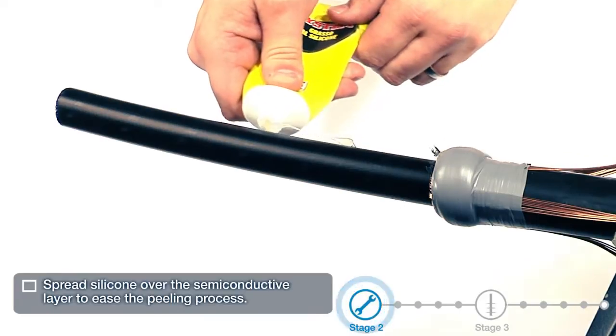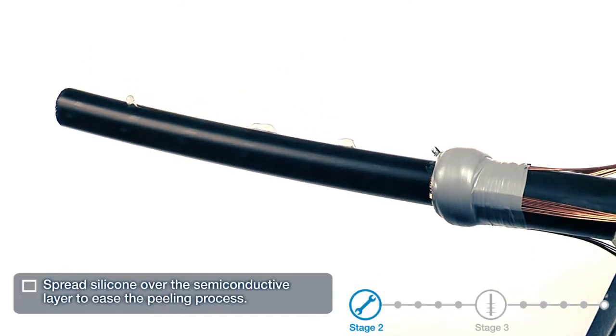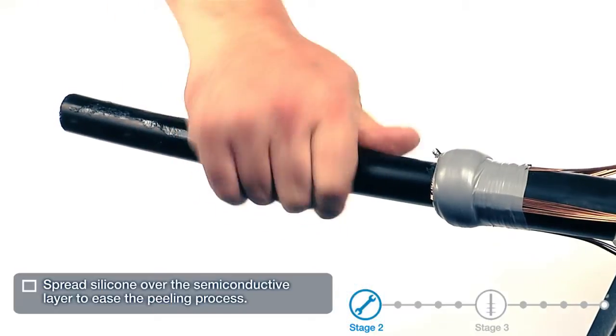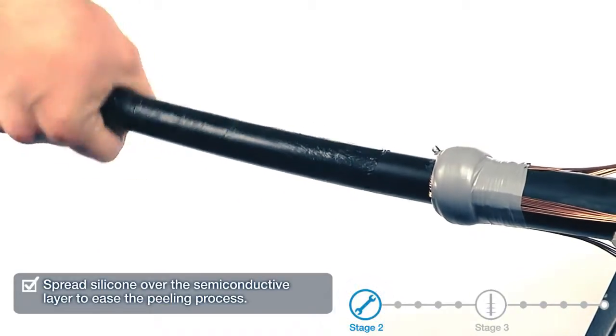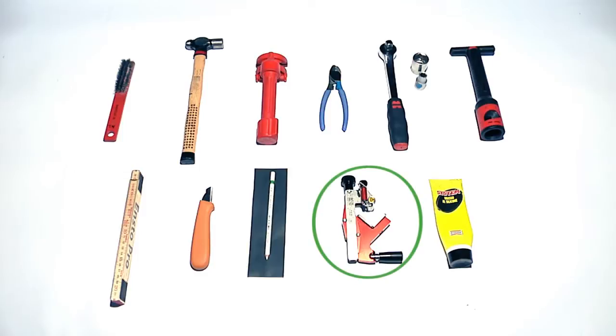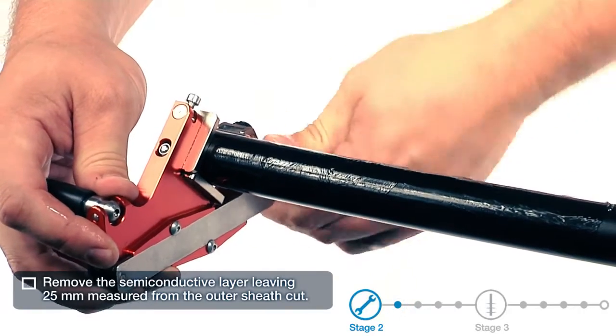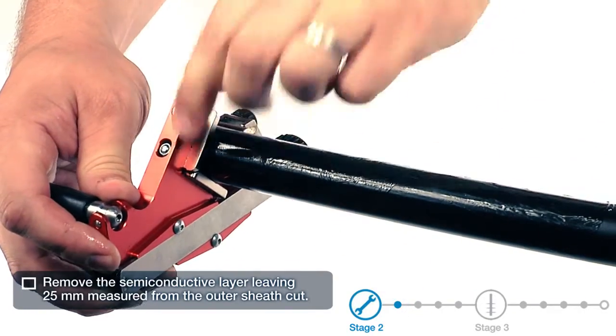Spread silicone over the semi-conductive layer to ease the peeling process. Remove the semi-conductive layer leaving 25mm, measured from the outer sheath cut.